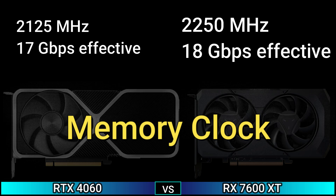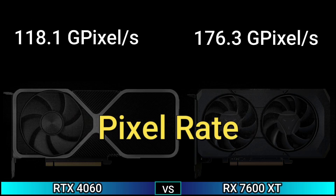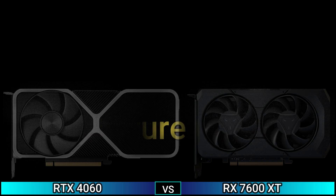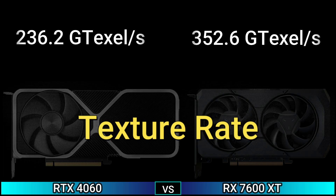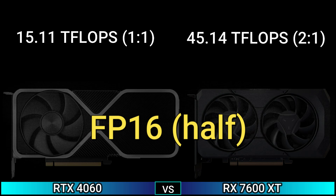Pixel rate: 118.1 GPixel/s and 176.3 GPixel/s. Texture rate: 236.2 GTex/s and 352.6 GTex/s. FP16 (half): 15.11 TFLOPS (1:1) and 45.11 TFLOPS (1:1).